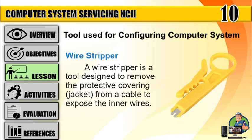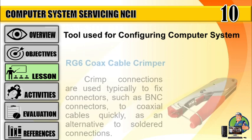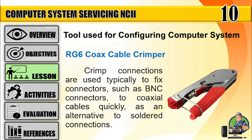Number 2: Wire stripper — a wire stripper is a tool designed to remove the protective covering, or jacket, from a cable to expose the inner wires. Number 3: RG6 Coax Cable Crimper — crimp connections are used typically to fix connectors, such as BNC connectors, to coaxial cables quickly, as an alternative to solder connections.